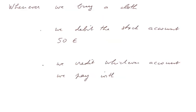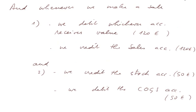So on the one hand, whenever we buy a cloth, we debit the stock account, the value of the clothes, 50 euros. And we credit whichever account we pay with, cash or check or an IOU to the supplier of clothes. And on the other hand,